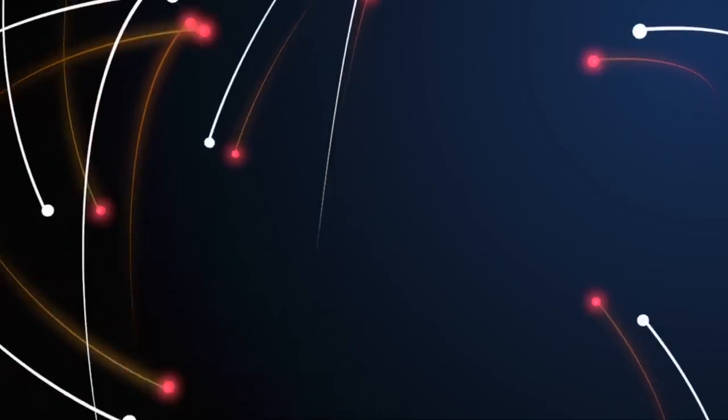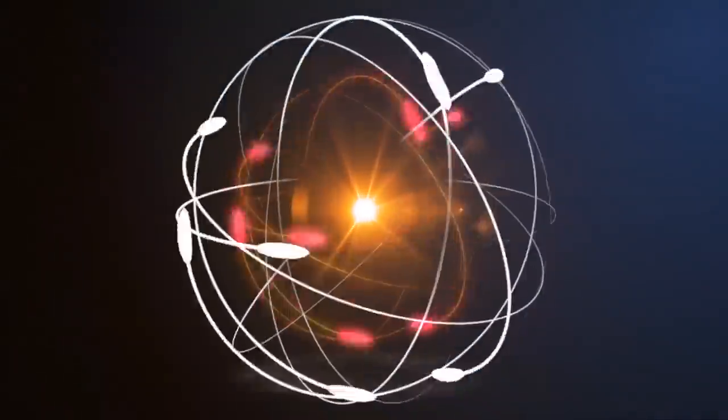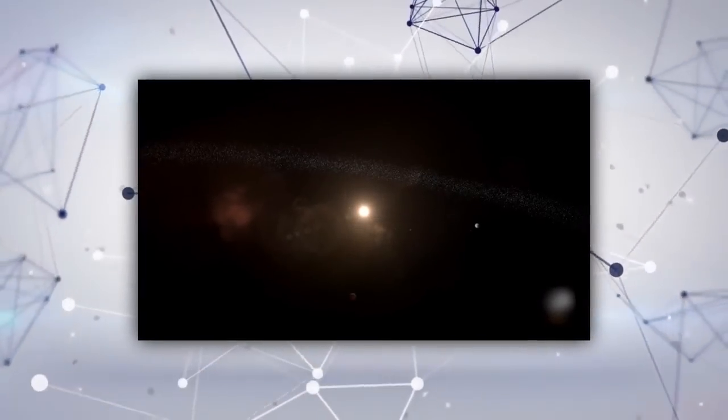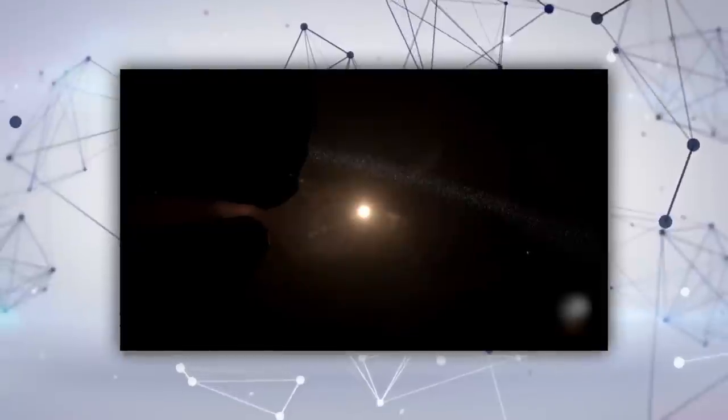In the solar system, the typical proton and electron density is 3 to 10 particles per cubic centimeter. However, when you travel further away from the sun, it lessens. In the outer heliosphere, the density drops to roughly 0.002 electrons per cubic centimeter.